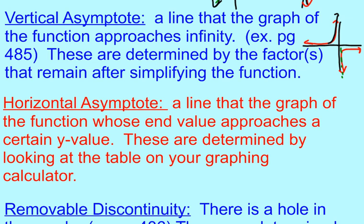And those are found, you'll notice here it says found by the factors that remain after simplifying. So we're going to talk about that in a few minutes. A horizontal asymptote, then, would just be one that's this way. So, like, here's an example of a horizontal asymptote. Same idea. So one can be vertical, one can be horizontal.